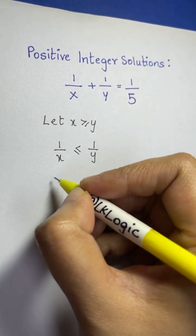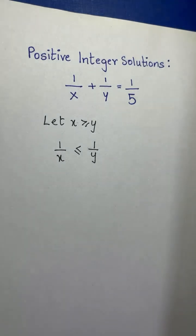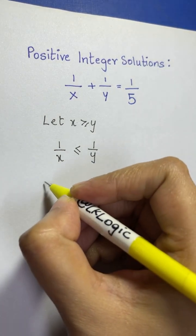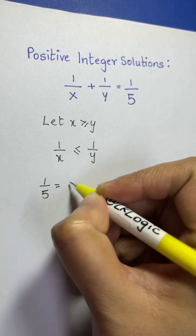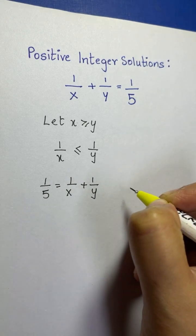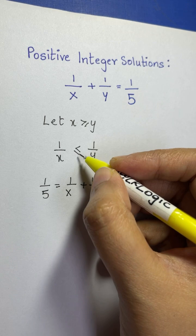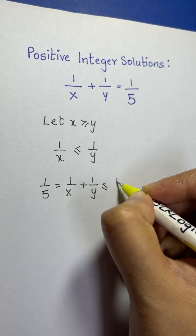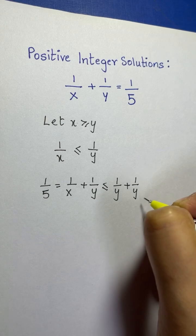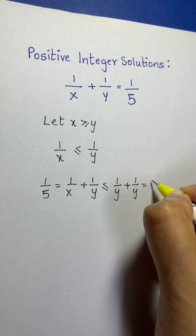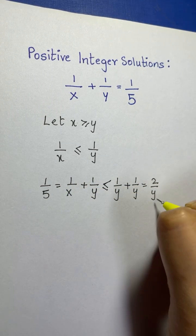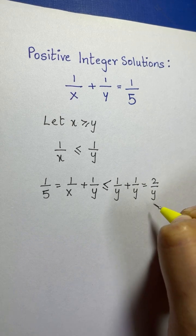Now let's write this back in the equation: 1/x + 1/y = 1/5. Since 1/x ≤ 1/y, we can write 1/5 = 1/x + 1/y ≤ 1/y + 1/y, which equals 2/y. So we have 1/5 ≤ 2/y.